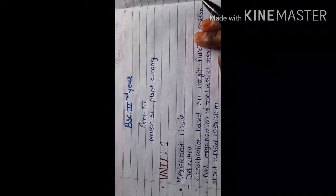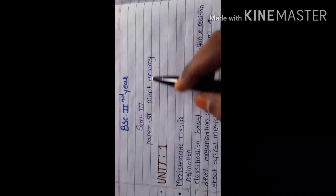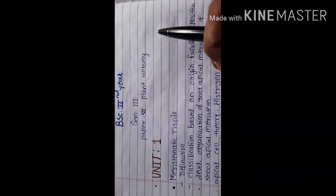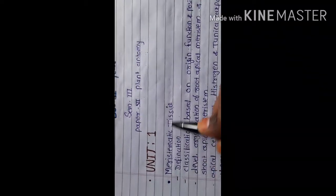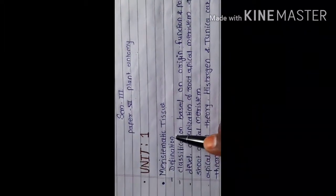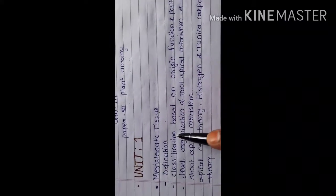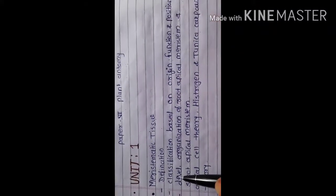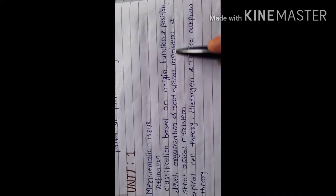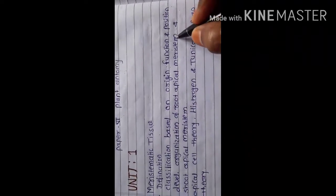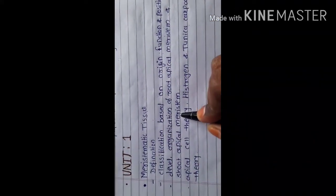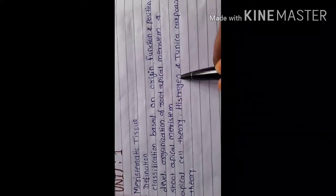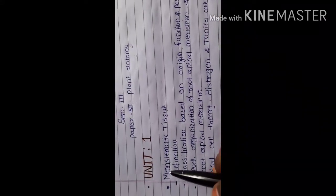Hello students, this is our first lecture regarding paper number six, that is Plant Anatomy. In this paper we cover four units. Today we start our first unit, that is meristematic tissue. In this unit we see the definition and classification of meristematic tissue based on origin, function, and position, along with the development and organization of root apical meristem (RAM) and shoot apical meristem (SAM), as well as apical cell theory, histogen theory, and tunica corpus theory.